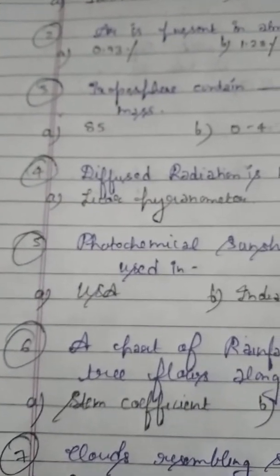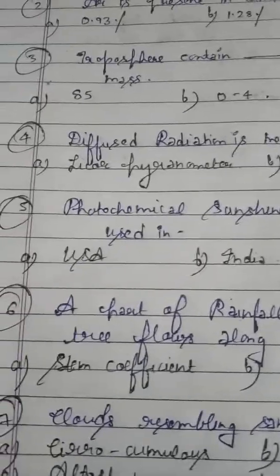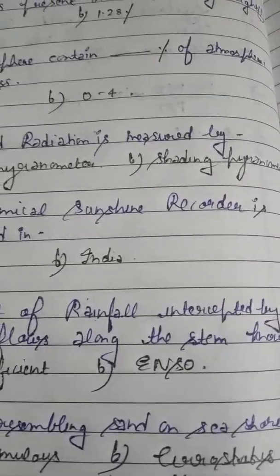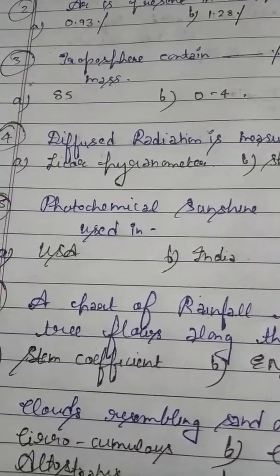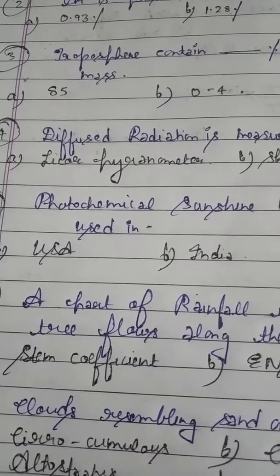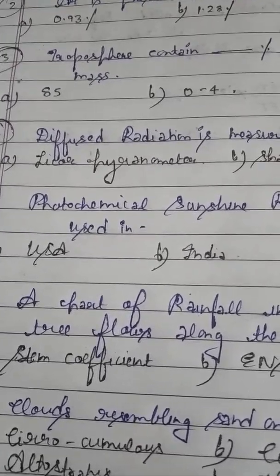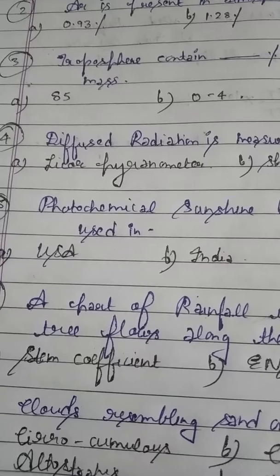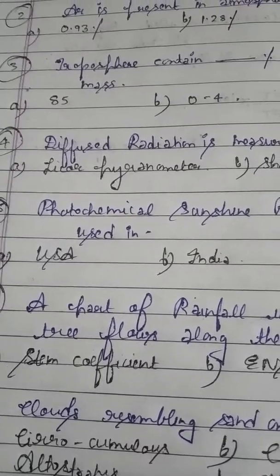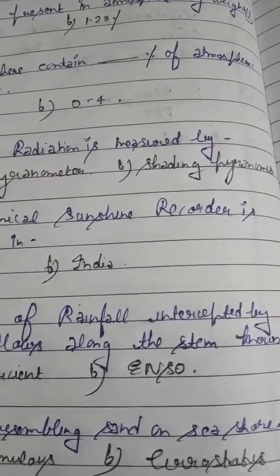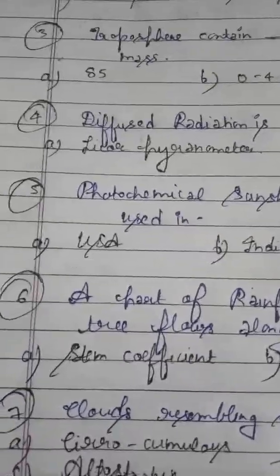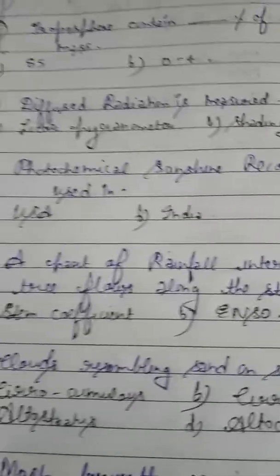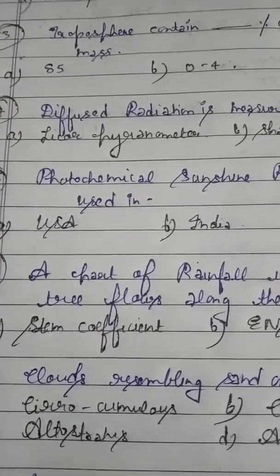Question number 2: Argon is present in the atmosphere by weight. There is a chart for the composition of gases which you have to remember. Nitrogen contains 78% of the Earth's atmosphere by volume, but by weight it is only 75%. Oxygen is 20% by both weight and volume. Argon is 0.93% by volume. Carbon dioxide is 0.03% by volume, and other gases are in traces.